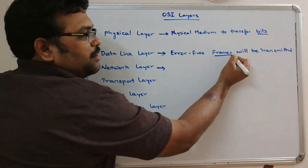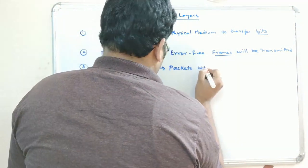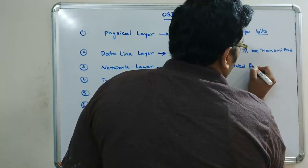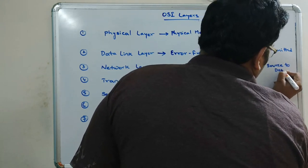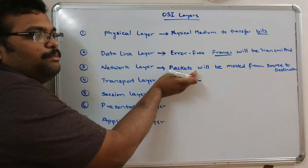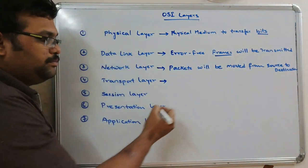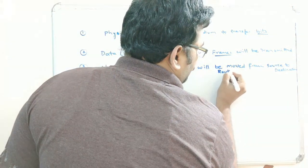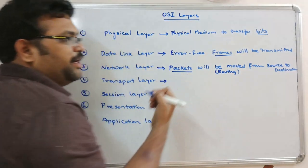Coming to the network layer, these frames are again converted into packets. Packets are moved from source to destination. In the network layer, packets are created and routed from source to destination — so routing is done here and the data is in terms of packets.